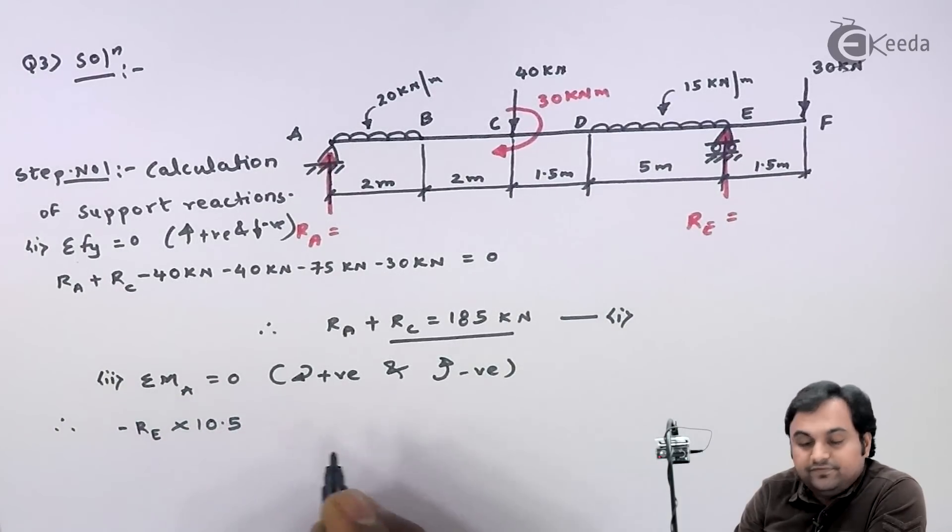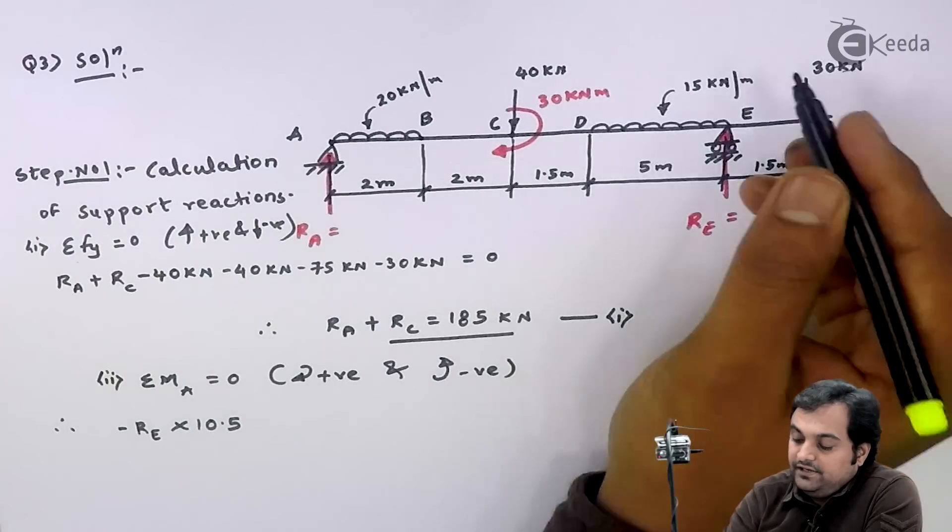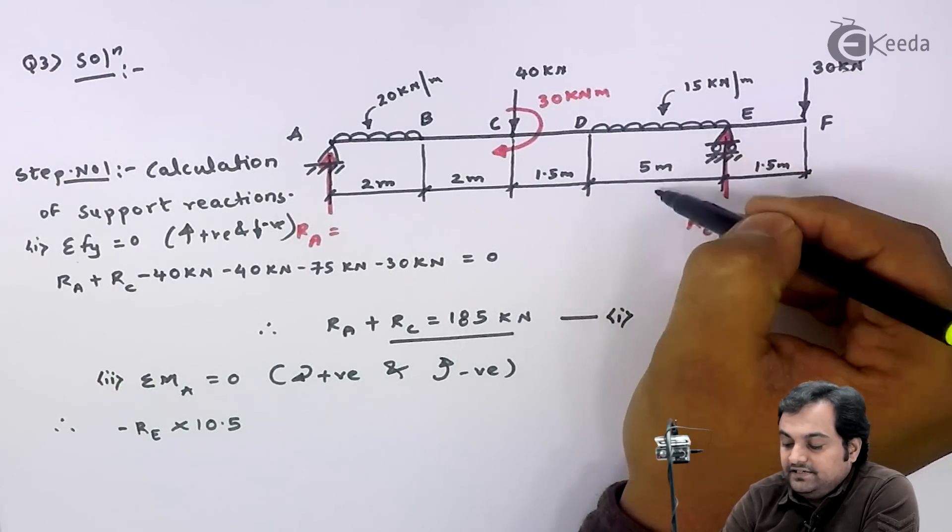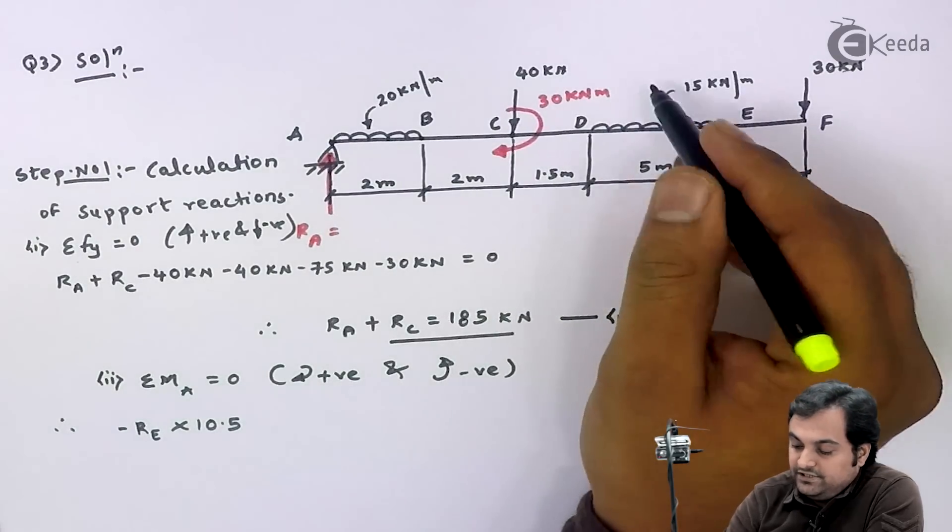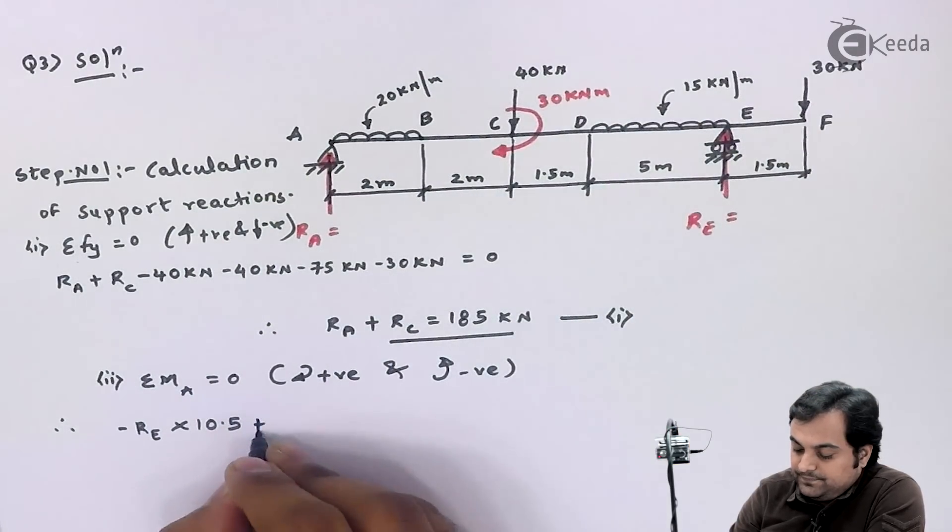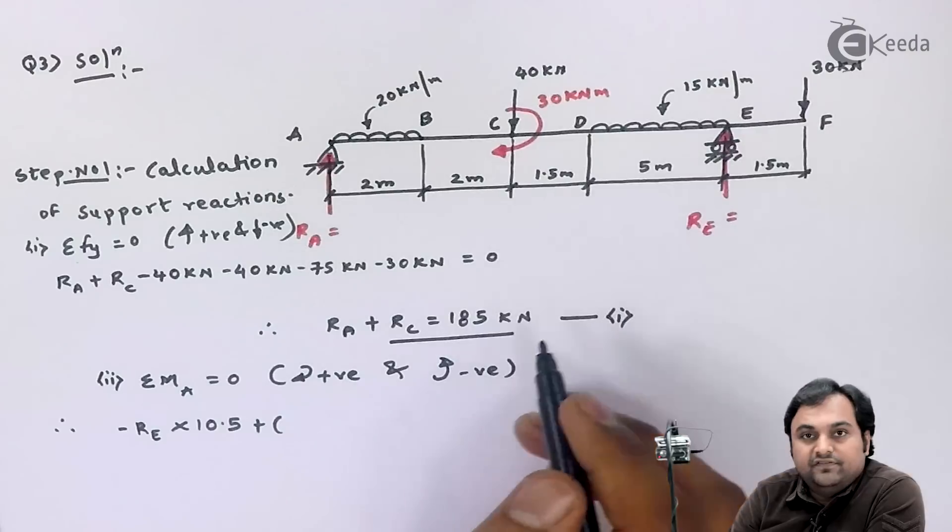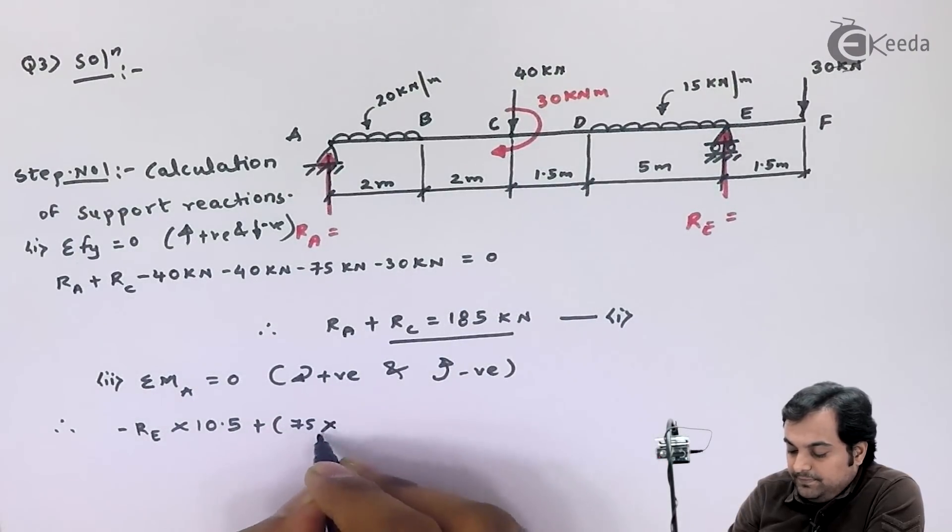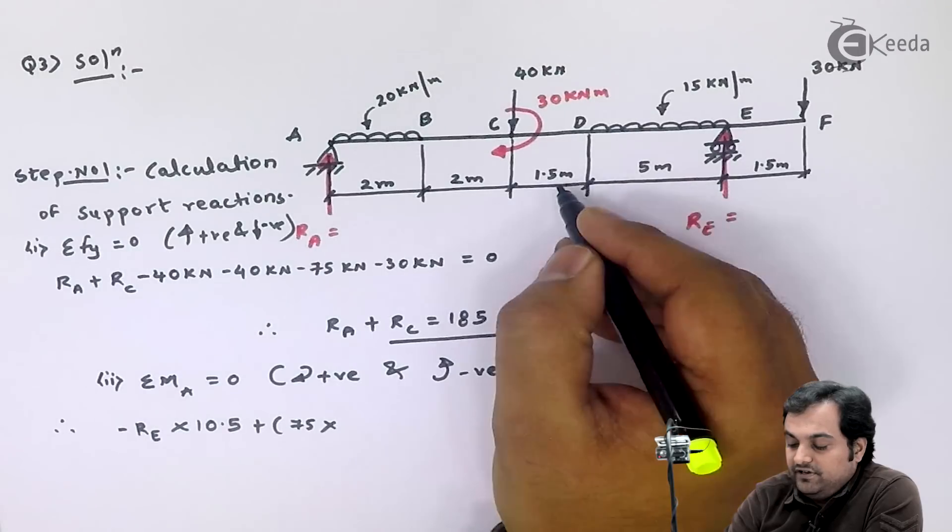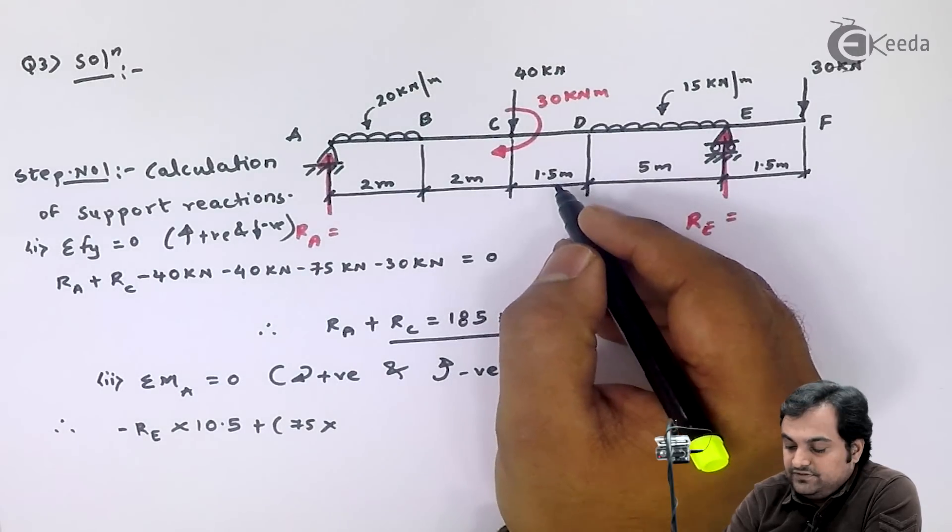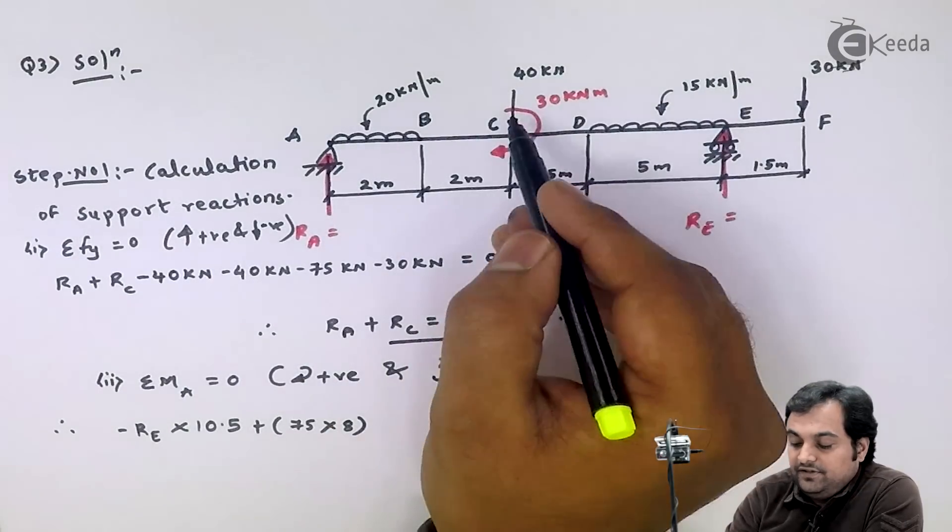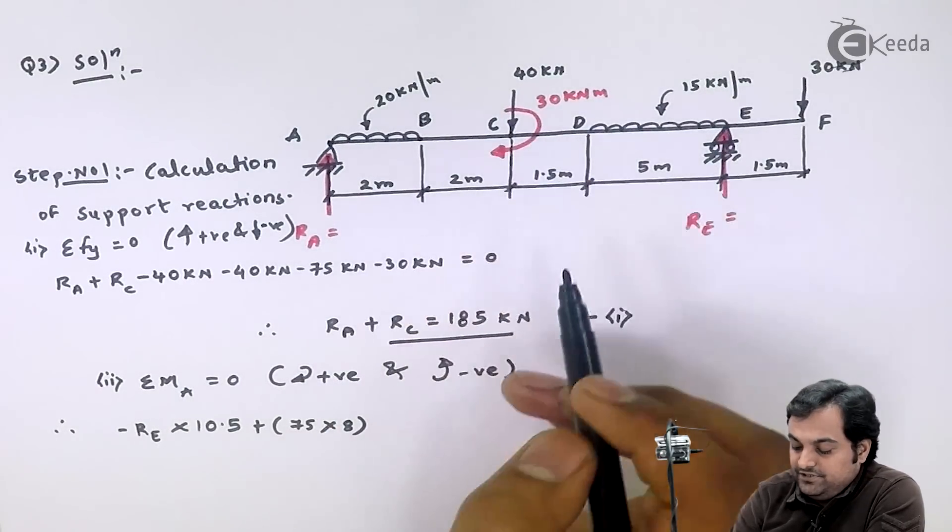Then here I have 15 into 5, that's 75 acting at half of 5, which is 2.5, and it's in the downward direction so clockwise moment. So plus 75 multiplied by its distance from point A—that will be 2.5 plus 1.5 is 4, plus 4 is 8. And here I can see one more clockwise moment, 30, so I'll write it as positive in the clockwise direction.